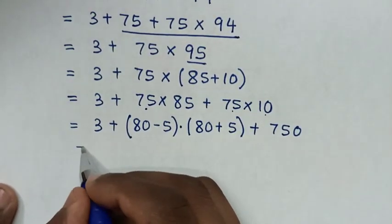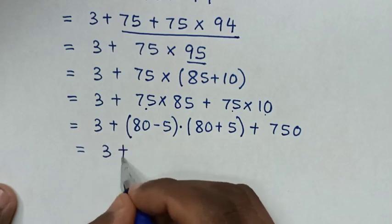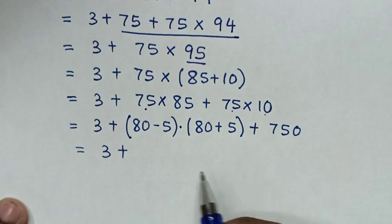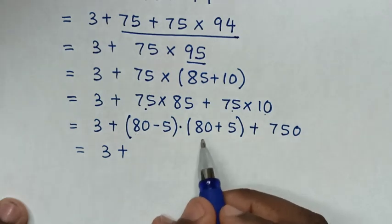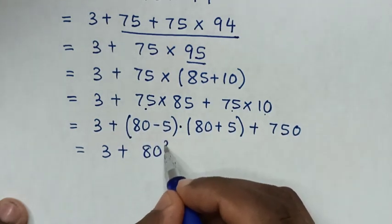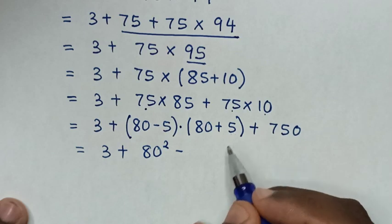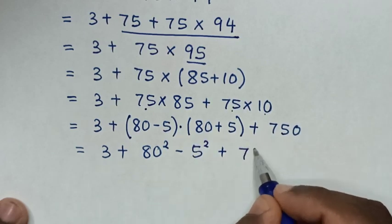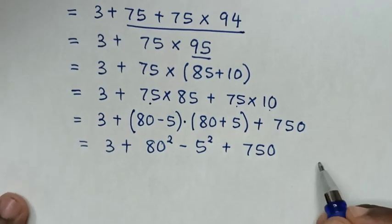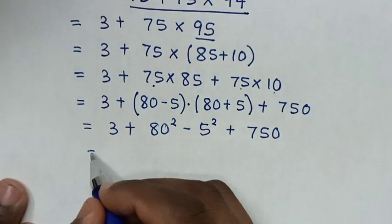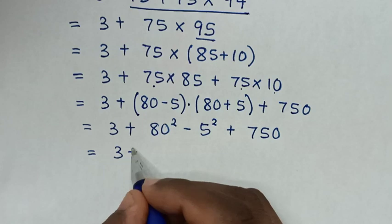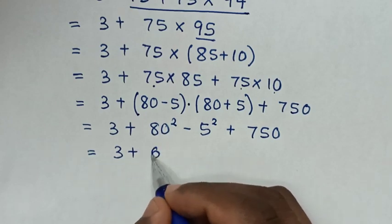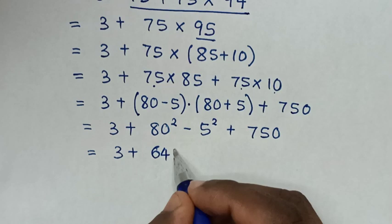Then in the next step it will be equal to 3, then plus 75 times 85, then plus 750. In the next step: 3 plus 80 squared minus 5 squared, then plus 750.